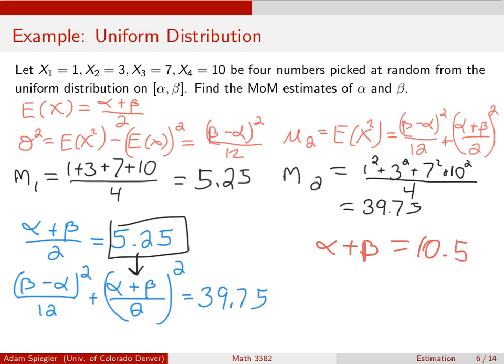And from the second equation, you can see after I plug in the 5.25, I can multiply by 12 and then take the square root. And I can solve for minus alpha plus beta, which in this case winds up being 12.093 approximately.